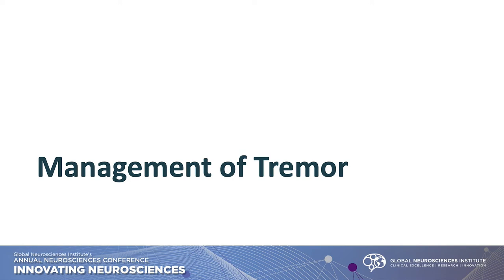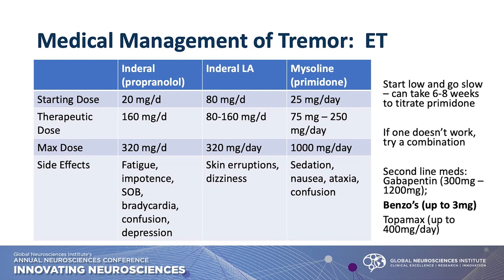The medical management of essential tremor honestly hasn't changed much from what you're used to — but take note of the therapeutic dose range. If someone is on propranolol or primidone and they're on the lower end of the spectrum, you may want to push it higher if they can tolerate it. These medicines do have side effects — cardiac issues to watch with propranolol, and cognitive and somnolent side effects with primidone. Second-line therapies include gabapentin. Benzos can work at low doses when appropriate in certain tremor patients — essential tremor, physiologic, functional, and Parkinson's — as well as Topamax.